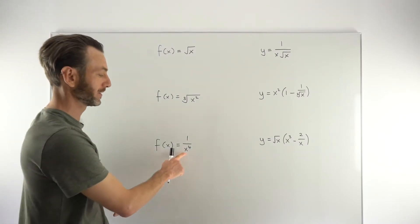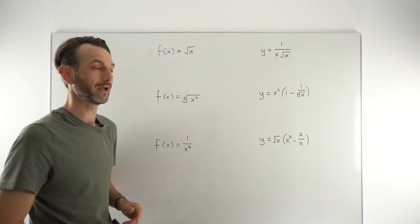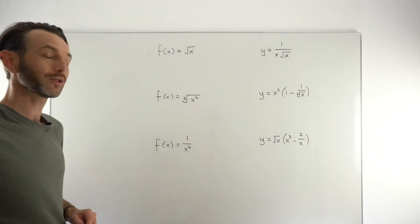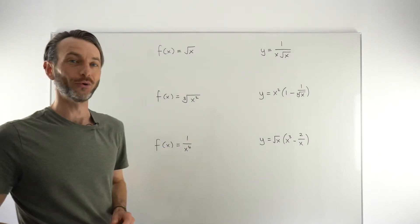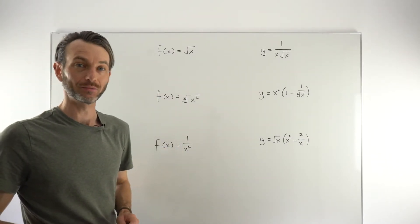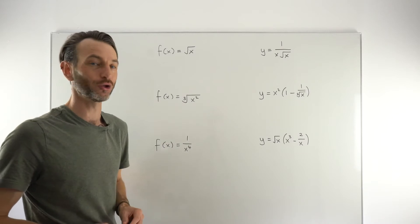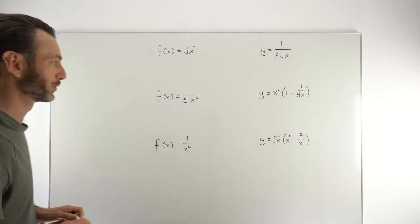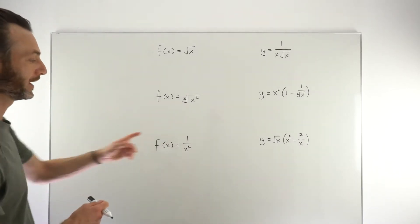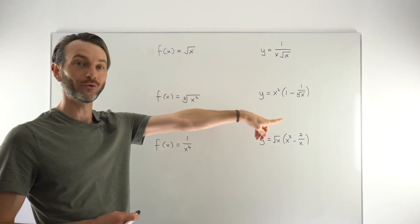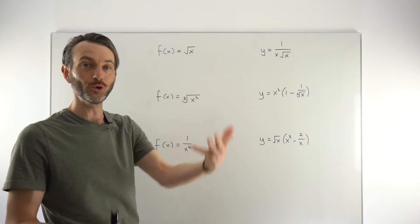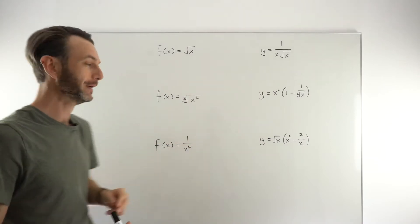How do I manipulate this to put it into the correct format? That's what I want to focus on in this class, because the power rule itself is actually quite straightforward to apply if things are in the correct format, which they're usually not.